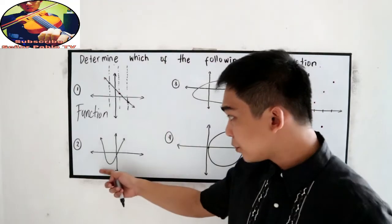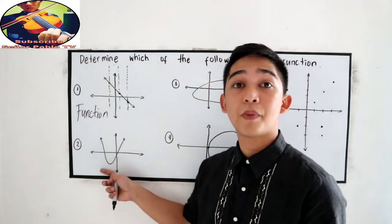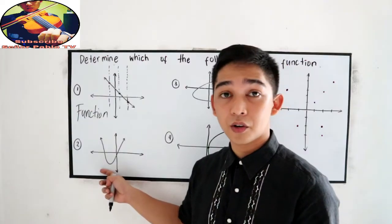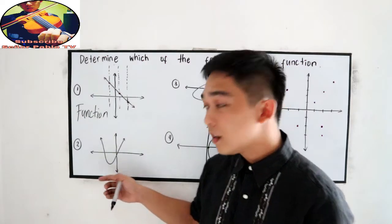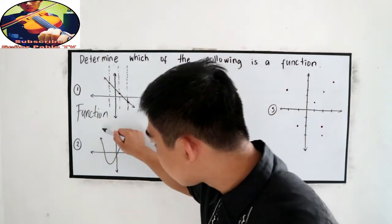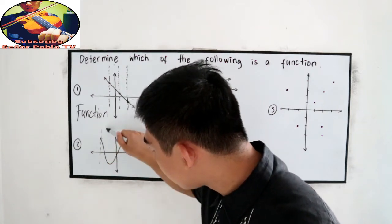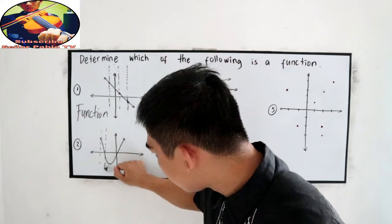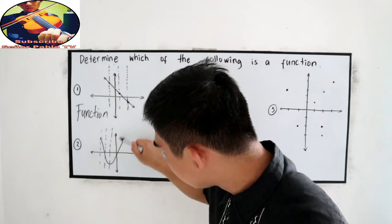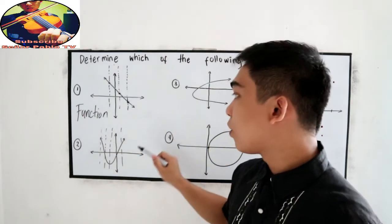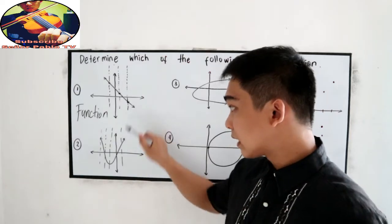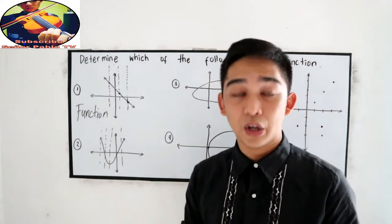Next, number two. We have a parabola that opens upward. Your lesson in grade nine. Let us use the vertical line test. It must touch our...